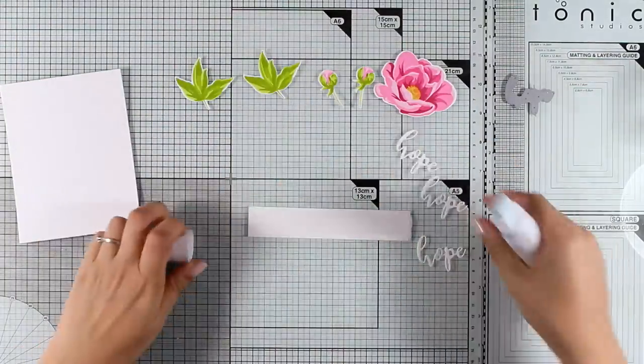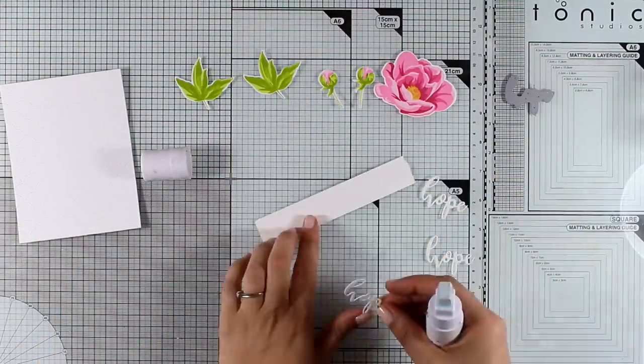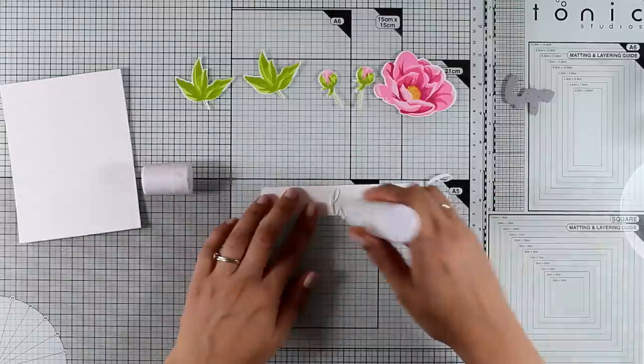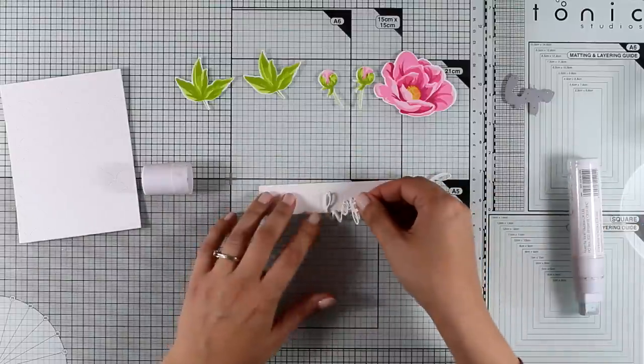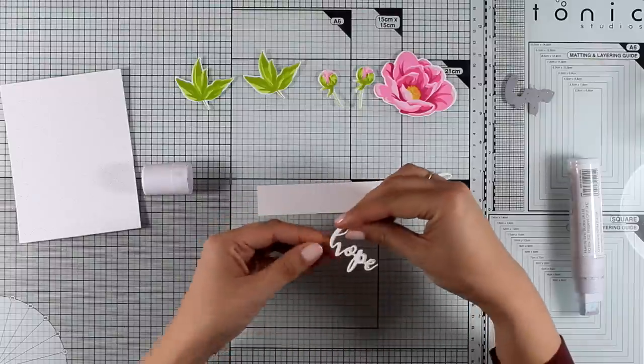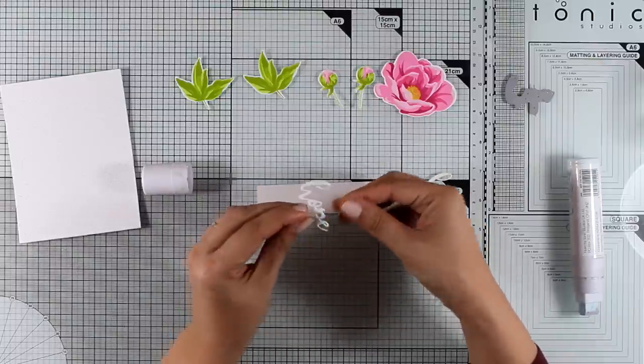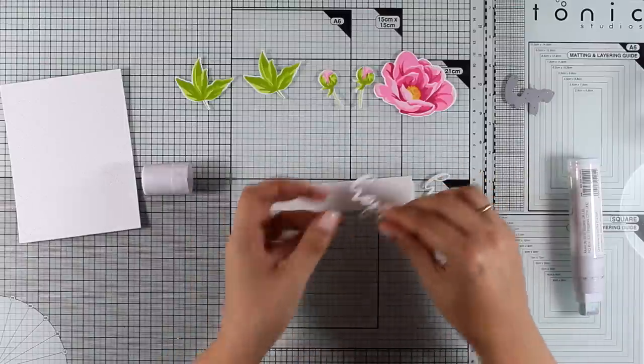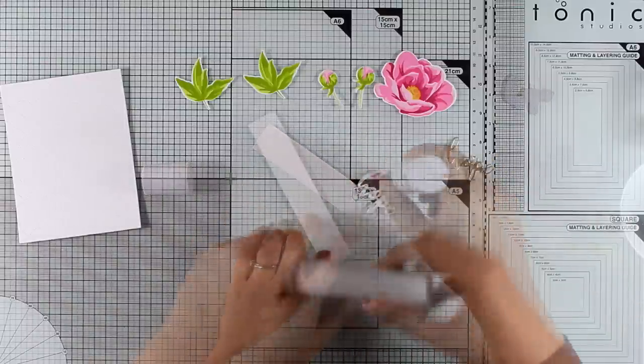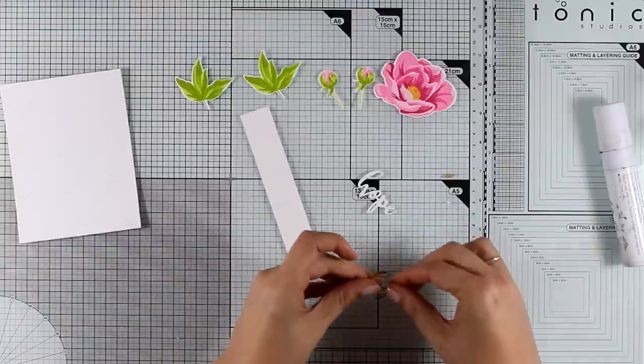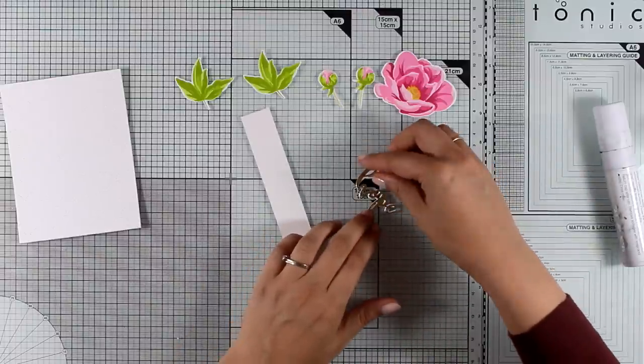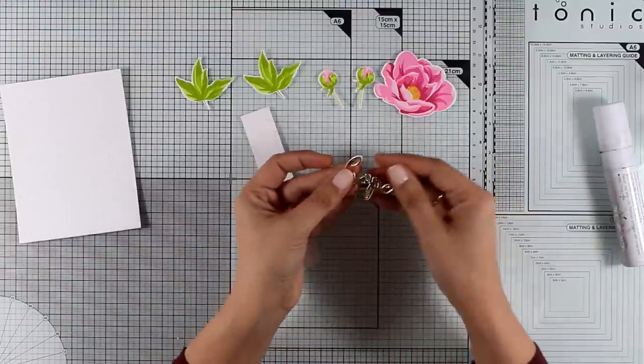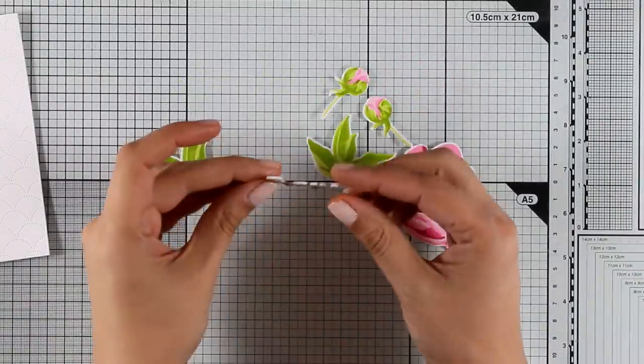Now this stamp set has the word hope that goes beautifully with other sentiments available in the stamp set. But the matching dies also give you the option to cut out the word hope instead of just stamping it. And that's exactly what I did here. I cut out the word hope three times from white cardstock and one more time from golden cardstock. And I'm going to stack one on top of the other. I will end up with a beautiful hope word at the end that is nice and shiny with lots of dimension.